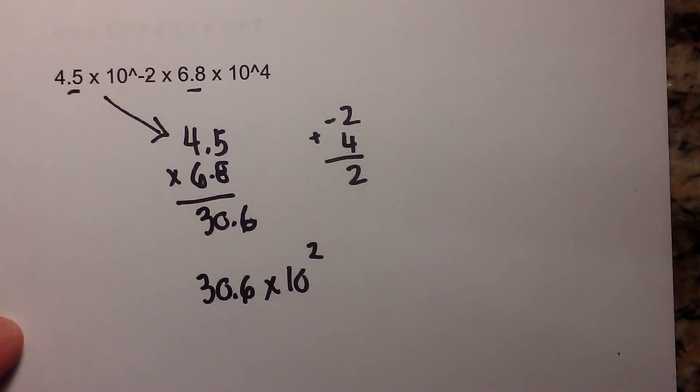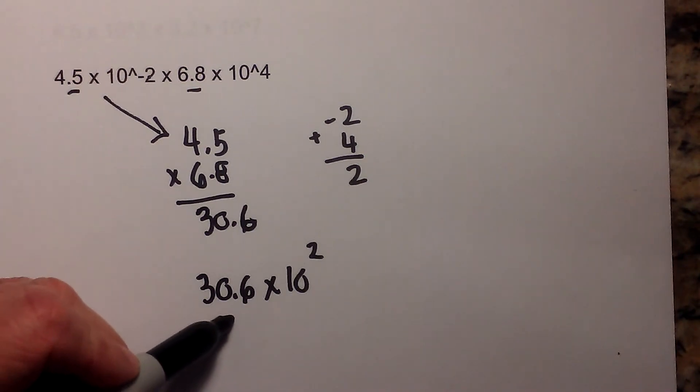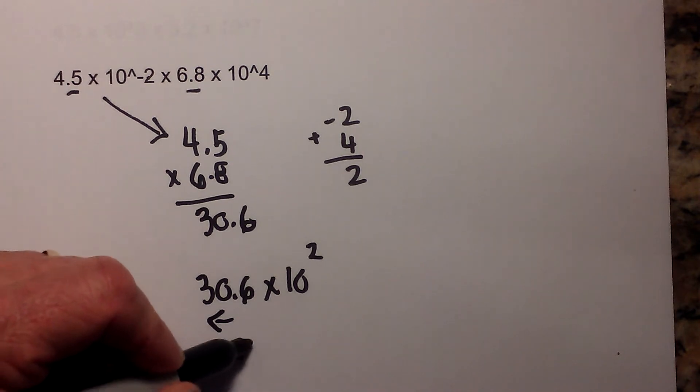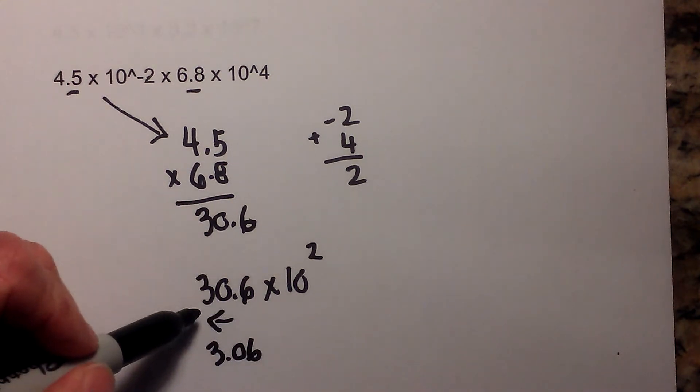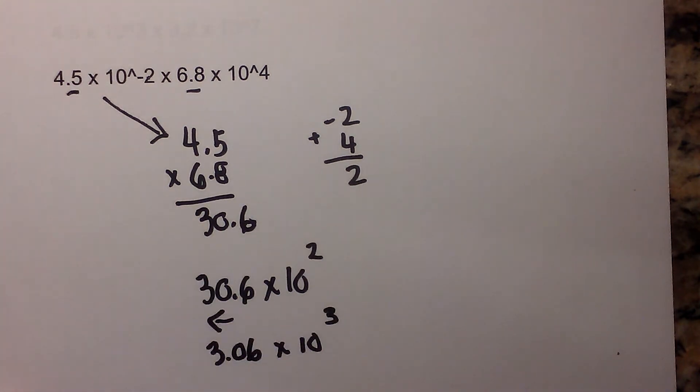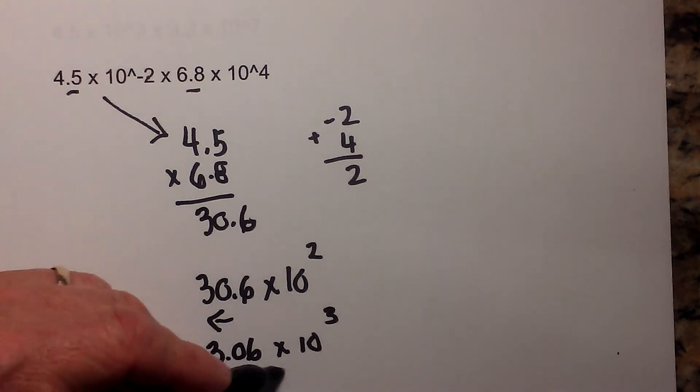But it is not in correct scientific notation form, so I need to move the decimal one place to the left, so it becomes 3.06. And remember, as the number gets smaller, the exponent gets larger, so I will add 1 to that. So there is the answer.